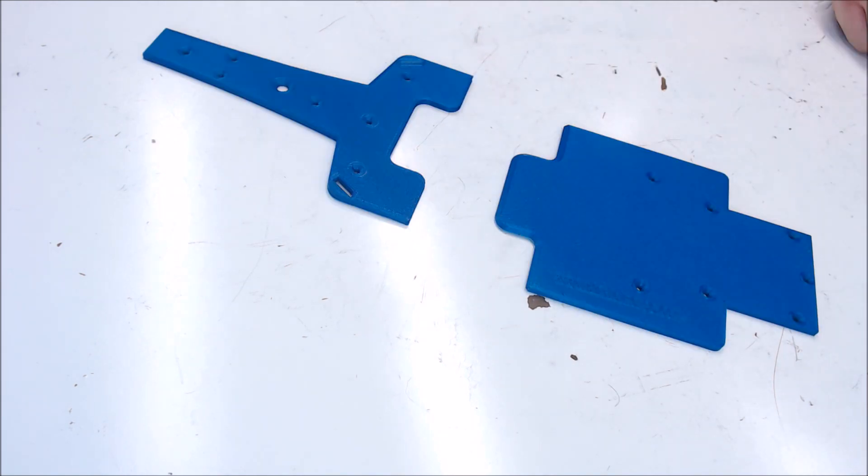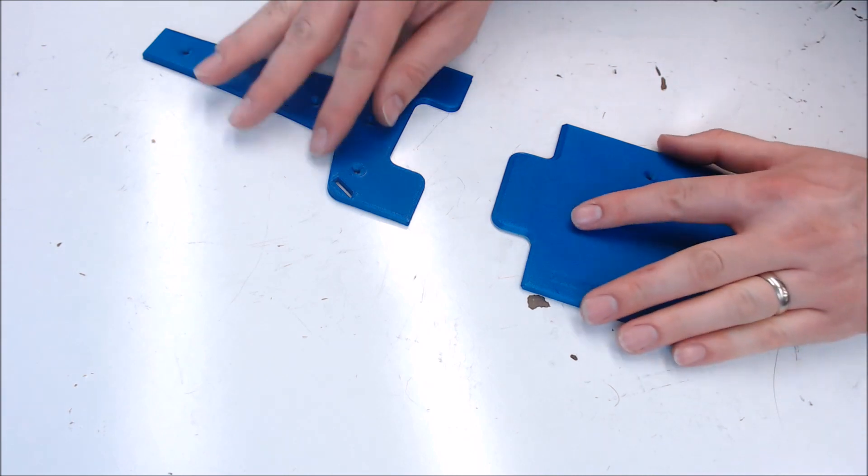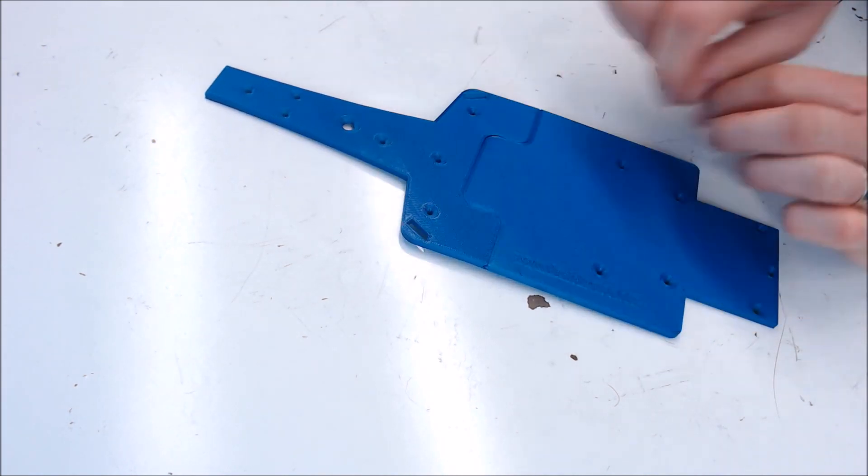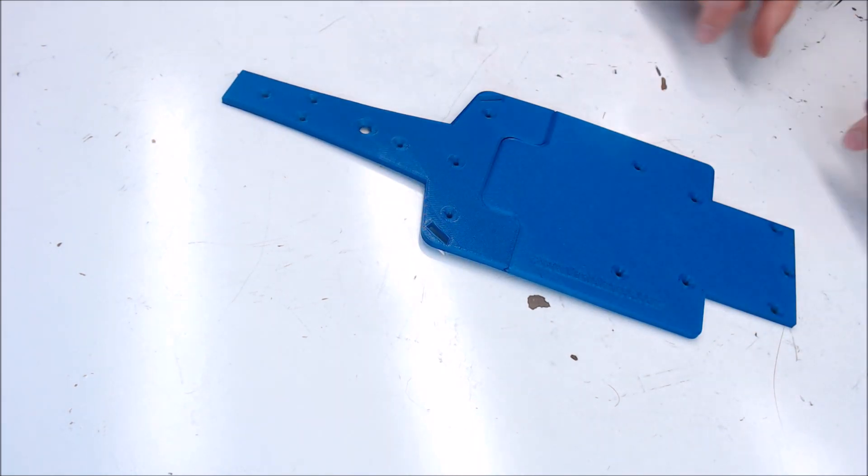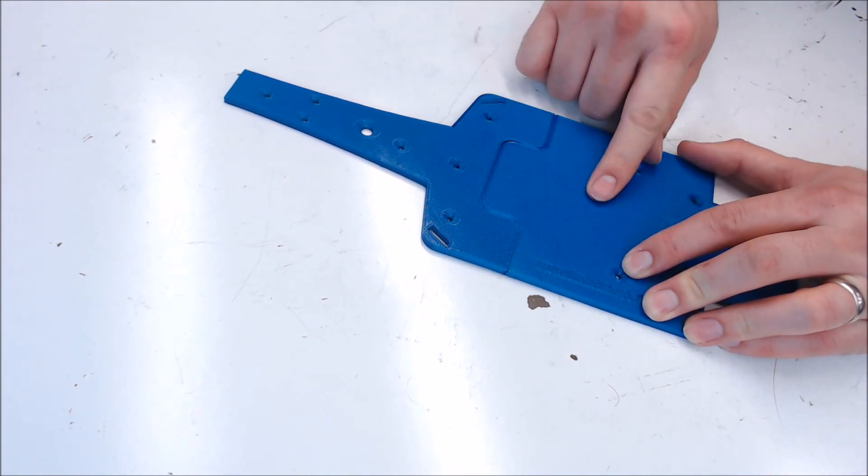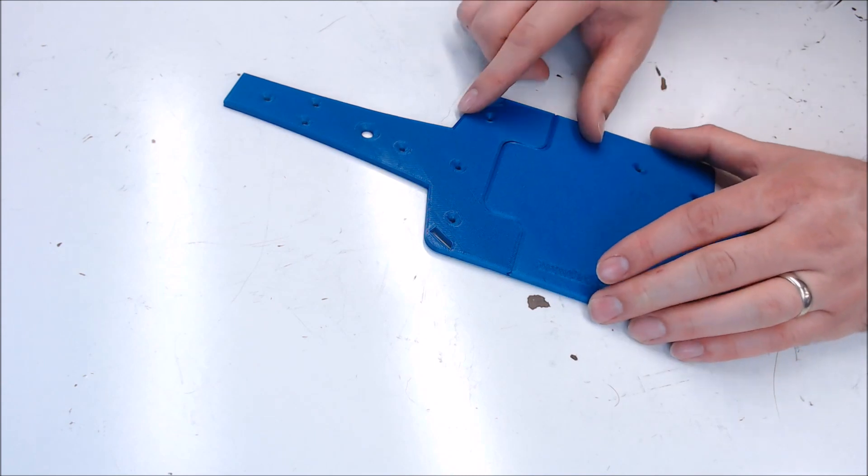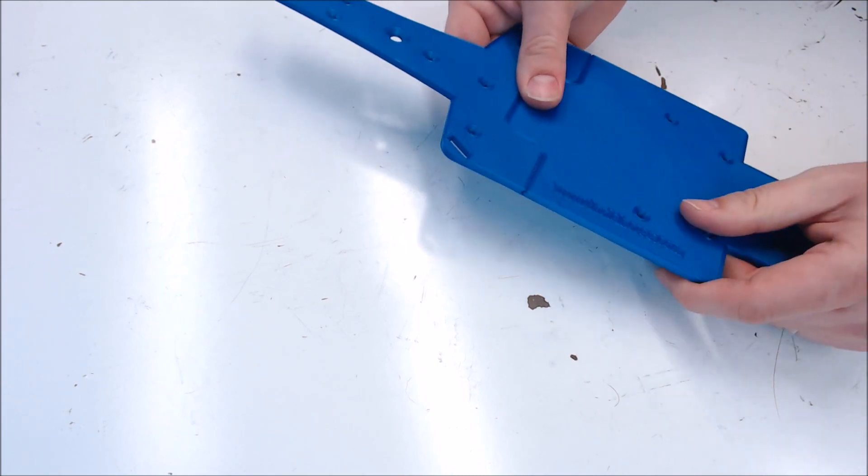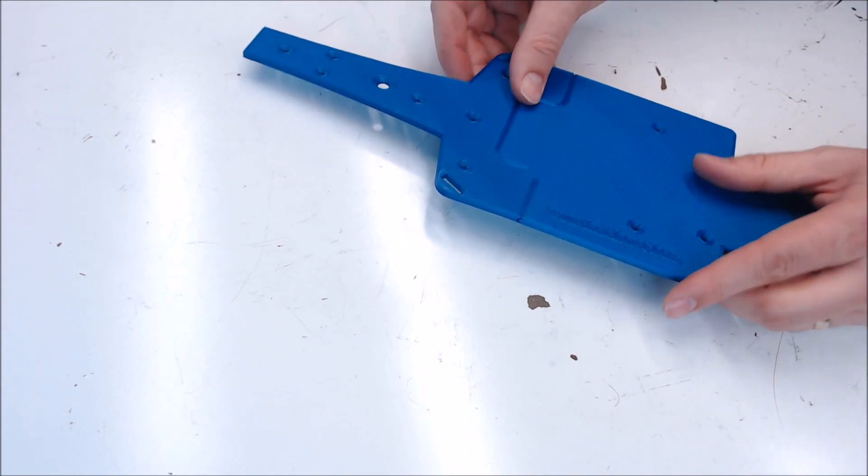So for the first part of the build, we'll take the front and rear chassis and we'll slide them together. All you need to know is you need to keep both parts with the same side for the countersunk holes. These will go to the bottom. The big parts are a little tricky to print. They can get a little warped, but as long as they're not too bad, you should be fine.